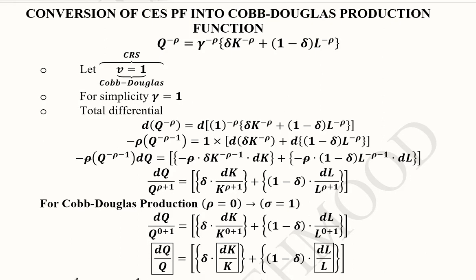So after all of these steps, we have transformed the CES production function into Cobb-Douglas production function, which is the testimony of the fact that Cobb-Douglas production function is one of the cases of the more general form of the production function known as the CES production function. Thank you.